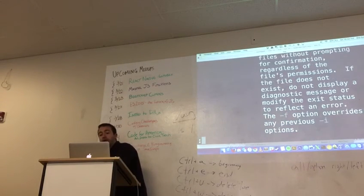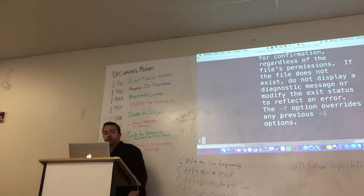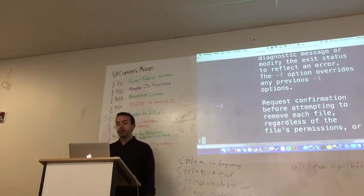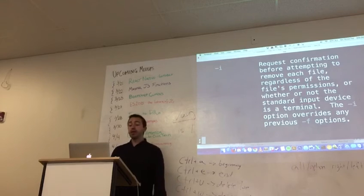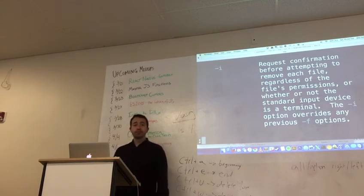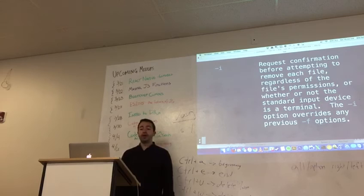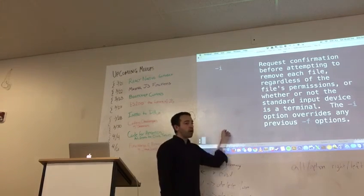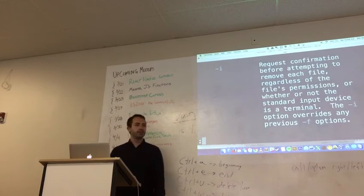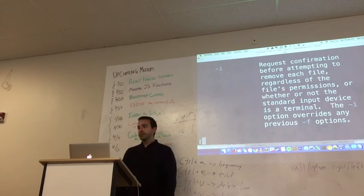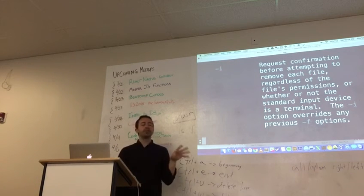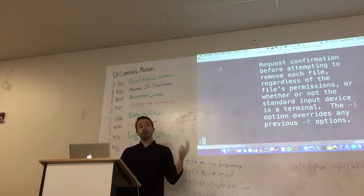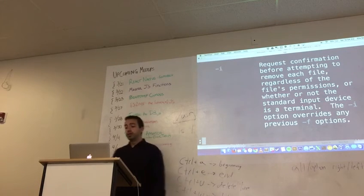The F option overrides the previous I options. Huh. What does the I option do? The I option is your saving grace. Request confirmation before attempting to remove each file regardless of the permissions. Why does someone who knows how to use rm not use the I flag? Prompt me. Yeah. You usually kind of have an idea of like, I know what I'm deleting. Please don't prompt me every time to say, are you sure? Are you sure? Are you sure? But it's good to know.